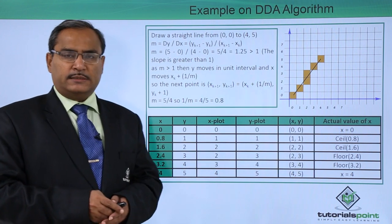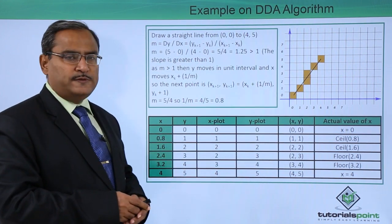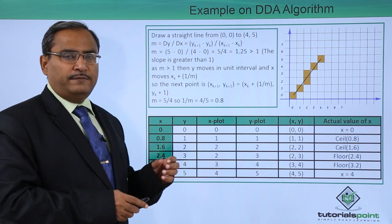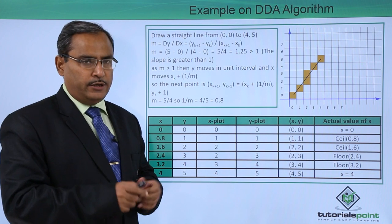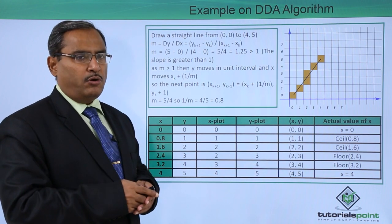Here is the problem for us and it has been asked to draw one straight line from (0, 0) to (4, 5). So (0, 0) is the starting coordinate and (4, 5) is the ending coordinate. In between, we are supposed to draw one line.